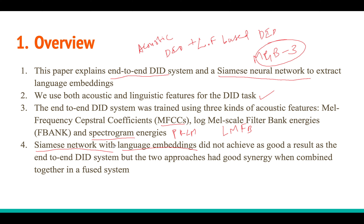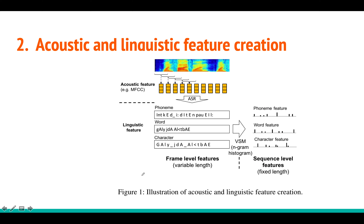If you use only linguistic features the model accuracy is not as good as the acoustic feature-based one, but when you fuse the two approaches together you get state-of-the-art results — around 80% accuracy. The idea is to combine the end-to-end acoustic model with the linguistic feature-based model and fuse their scores at the end.